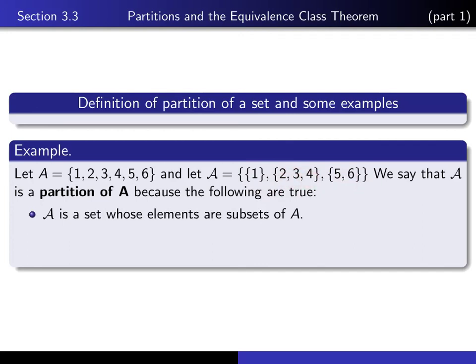This illustrates that in general, partitions always give rise to equivalence relations on sets. The more interesting direction is the reverse: if you start with an equivalence relation, that always gives you a partition of the underlying set. That result is known as the Equivalence Class Theorem, and it's the subject of the next lecture.